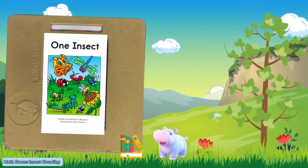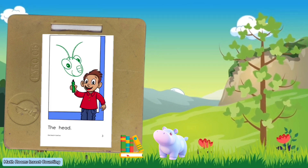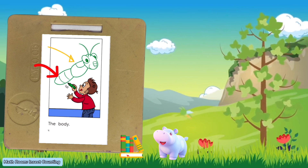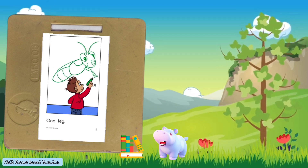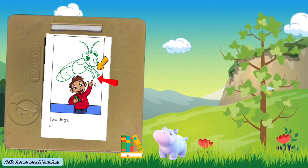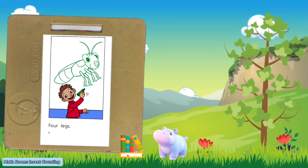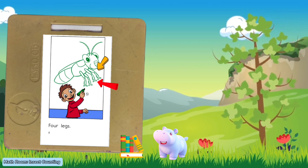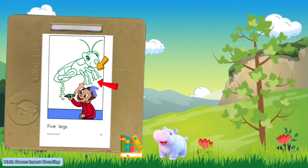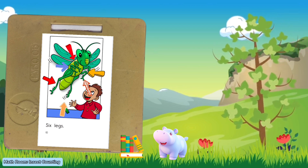'One Insect' by Catherine P. Burdick. The head — one. One head. The body — two parts. One leg. Two legs. Three legs: one, two, three. Four legs: one, two, three, and four. Five legs: one, two, three, four, five — one more. Six legs: one, two, three, four, five, six legs. Let's recap.